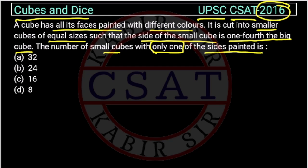So we have to find the central cube or one-sided painted. This is directly a formula-based question. The challenge here is how to find it because the size is not given, so here we have to assume.